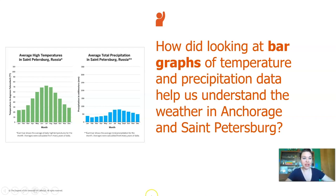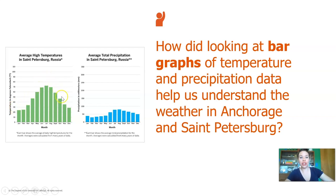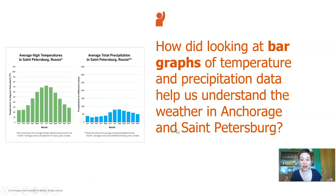For example, when we looked at the average high temperature in St. Petersburg, Russia over a year, we could see the pattern was low temperature, high temperature, low temperature. And when we look at the precipitation, we can see a pattern of low precipitation, high precipitation, low precipitation. That helps us figure out patterns and seasons, which is a really important part of weather.